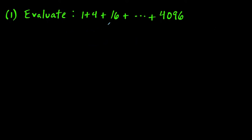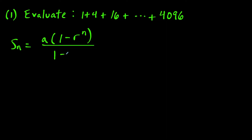For this first question, we want to evaluate the partial sum 1 plus 4 plus 16, all the way up to 4096. The first thing we need to do is find the common ratio of this geometric sequence. You can look at the sequence and ask what are we multiplying by each time to go from one term to the next — and you can see we're multiplying by 4 each time.